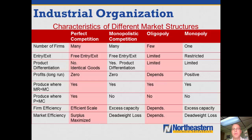Industrial organization: we reviewed several different kinds of market structures. We started with perfect competition, then we examined monopoly, and we've also looked at monopolistically competitive and oligopolistic market structures. There are some important things to think about as we consider the distinctions between these structures, both from a standpoint of what the market looks like and how these market structures perform in terms of economic efficiency.